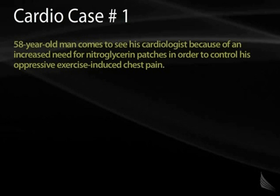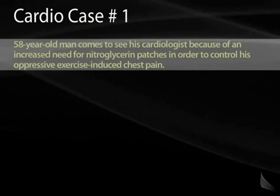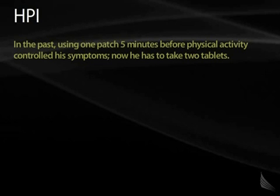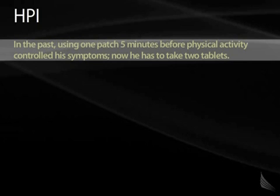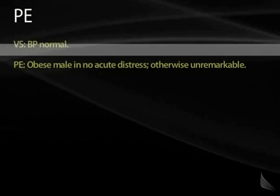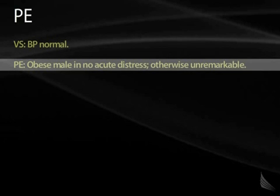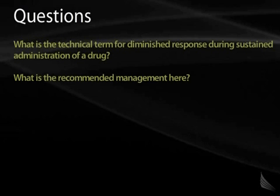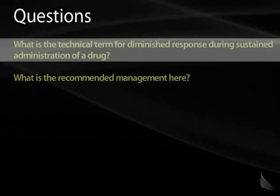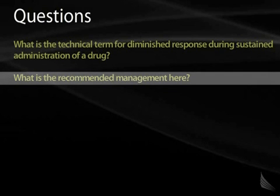For the first case, we have a 58-year-old man who sees his cardiologist because of an increased need for nitroglycerin patches to control his oppressive exercise-induced chest pain, or angina. Previously, he used one patch of nitroglycerin five minutes before physical activity to control his symptoms, but now he has to take two tablets. Vital signs show normal blood pressure; physical exam reveals an obese male in no acute distress. What is the technical term for diminished response during sustained administration of any drug, and what is the recommended management for this patient?